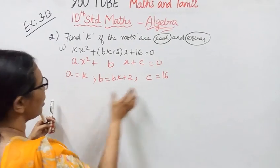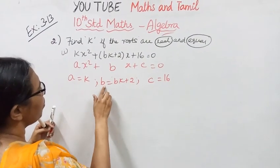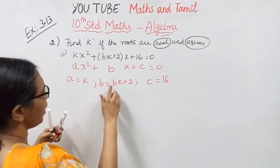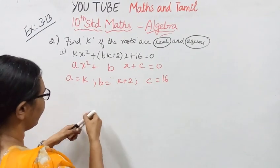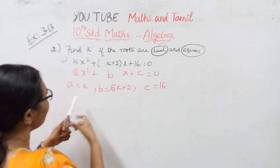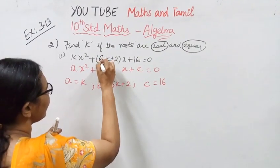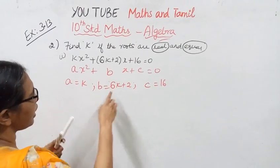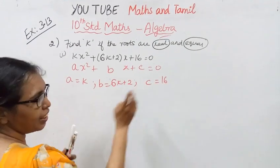From the given equation kx² + (6k+2)x + 16 = 0, we identify: a is equal to k, b is equal to 6k plus 2, and c is equal to 16.